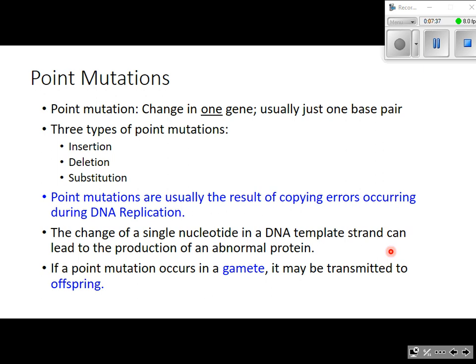Today we're going to talk about two major categories of mutations. There are point mutations, which we'll spend most of our time discussing, and there are also chromosomal mutations, which we'll cover at the end. A point mutation is a change in one gene — it only affects one gene and usually just one base pair. There are three types of point mutations: insertions, deletions, and substitutions. Point mutations are usually the result of copying errors that occur during DNA replication.